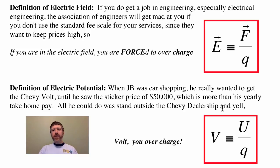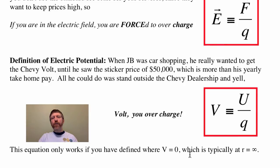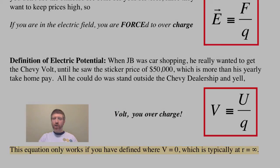And this is a very useful relationship, but it only works if you have defined where V equals zero, and you usually do this at r equals infinity. Otherwise you have to have deltas in front of this V and a delta in front of the U. That is true no matter what, but this will be true if you've defined where V or the electric potential equals zero. Volt, you overcharge!